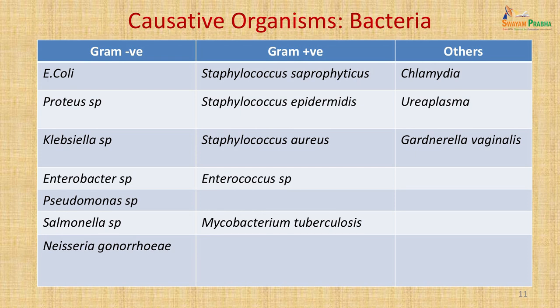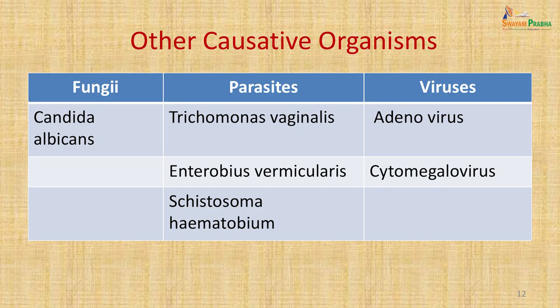The bacteria causing UTIs can be gram-negative, gram-positive, or other organisms such as Chlamydia, Ureaplasma and Gardnerella vaginalis. Gram-negative bacteria are more common; the commonest pathogen is E. coli, followed by Proteus, Klebsiella, Enterobacter, Pseudomonas, Salmonella and Neisseria. Among gram-positives, Staphylococcus saprophyticus is commonest, though other staphylococci and enterococci can cause infection. Mycobacterium tuberculosis can present as renal tuberculosis. Other causative agents include fungi, parasites and viruses.